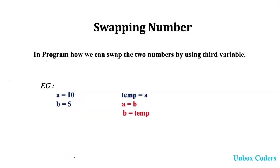The program will take the input first. The program has been executed by two methods: the first method shows how we can swap two numbers by using a third variable, and another method without using the third variable.